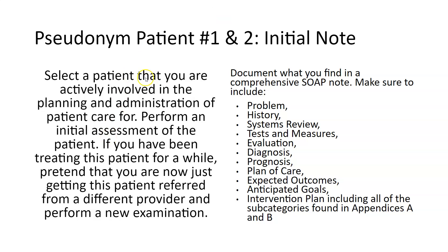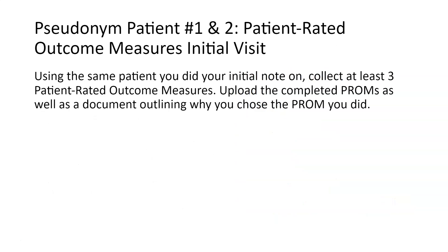Select a patient that you're actively providing care for with that for the initial note assignment. You need to include all of these categories and then the subcategories found in Appendix A or B as applicable in each of these components. So you need to write out a complete initial visit note for two different patients. In the pseudonym aspect, just make up their name and any demographics you can alter so that the patient is not readily identifiable.